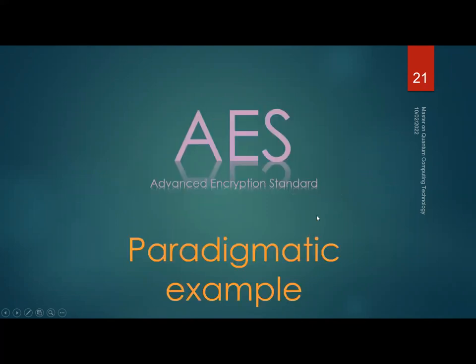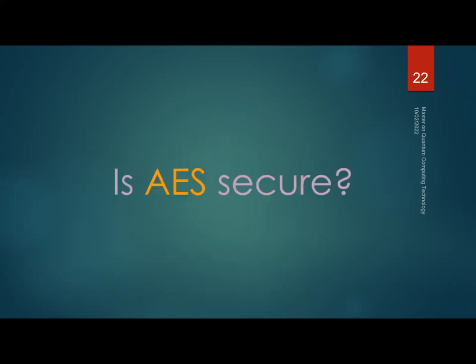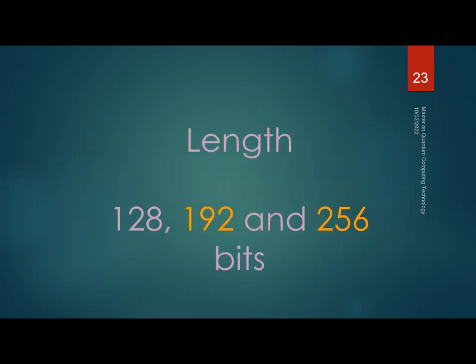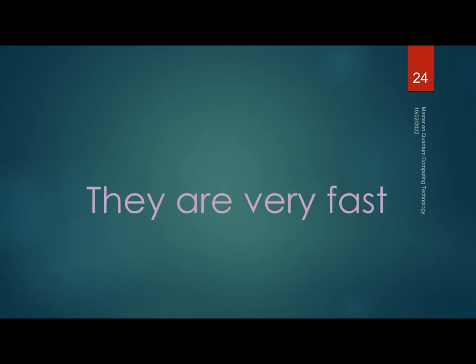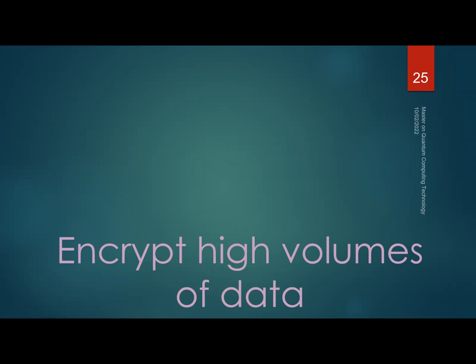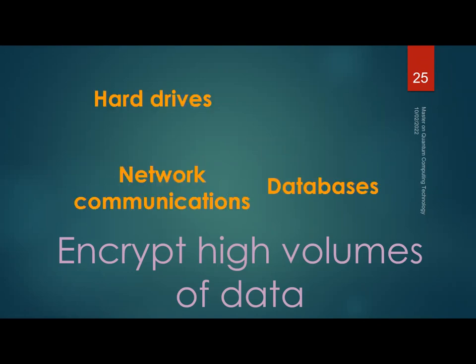The paradigmatic example of symmetric cryptography is the Advanced Encryption Standard (AES), which became a standard around 2001 after five years of analysis through a NIST process. It is used for classified information, including by NATO's National Security Agency. It has three key lengths — 128, 192, and 256 bits — and is very fast, suitable for encrypting high volumes of data such as databases, network communications, hard drives, and audio/video.